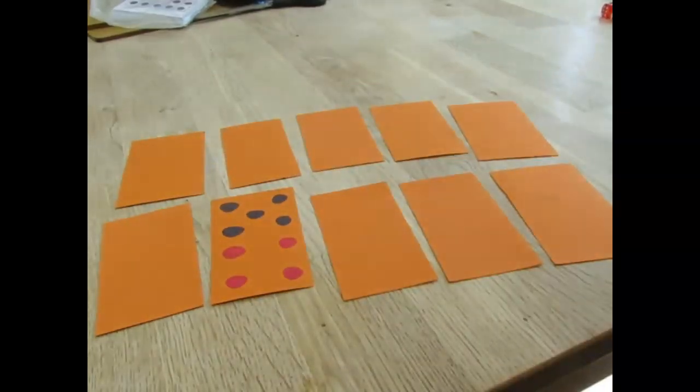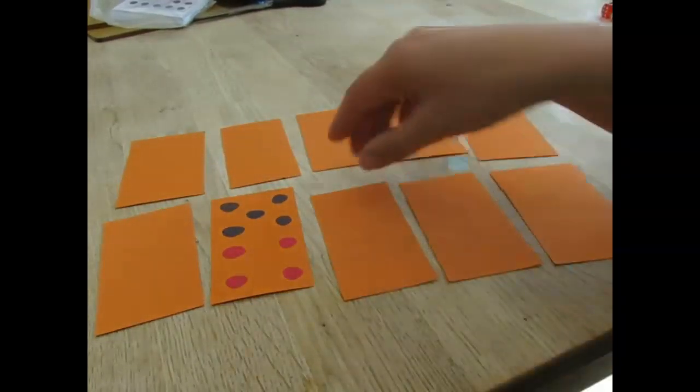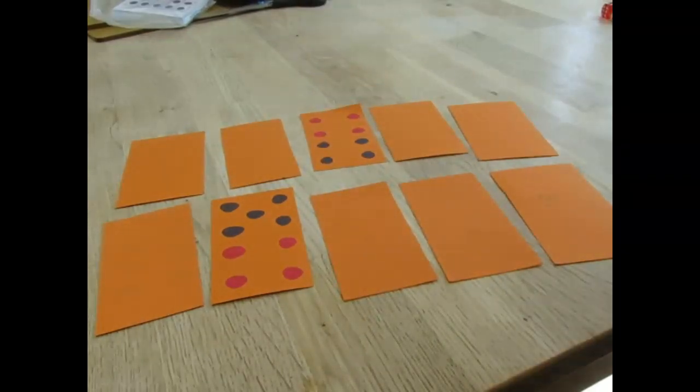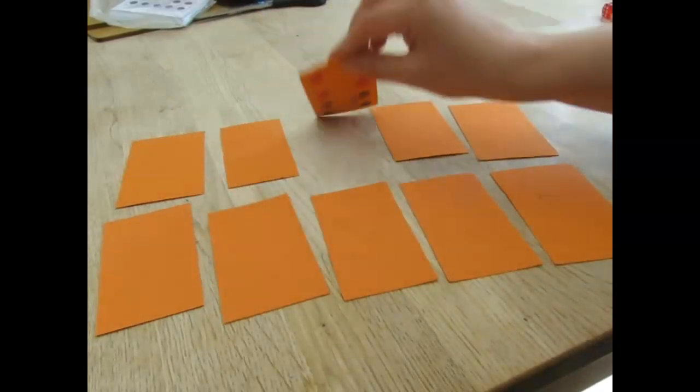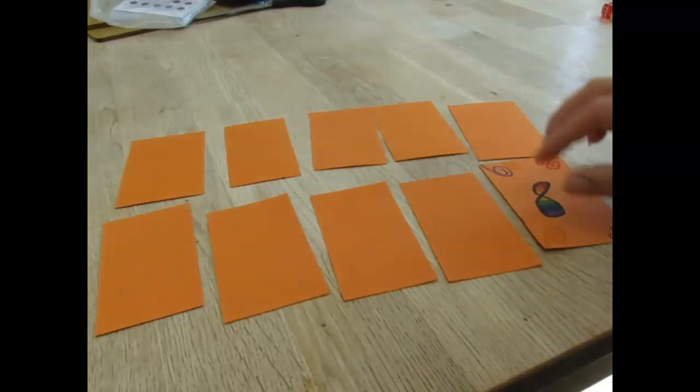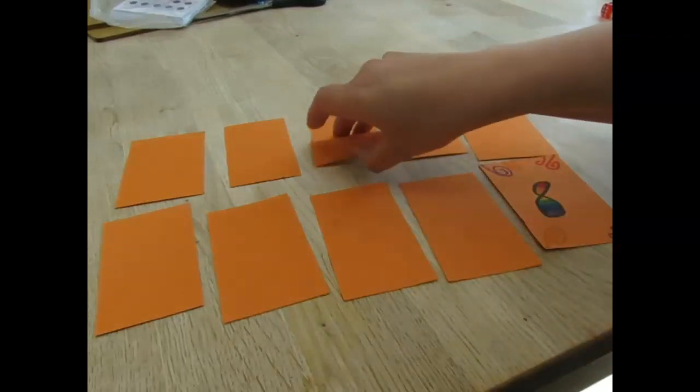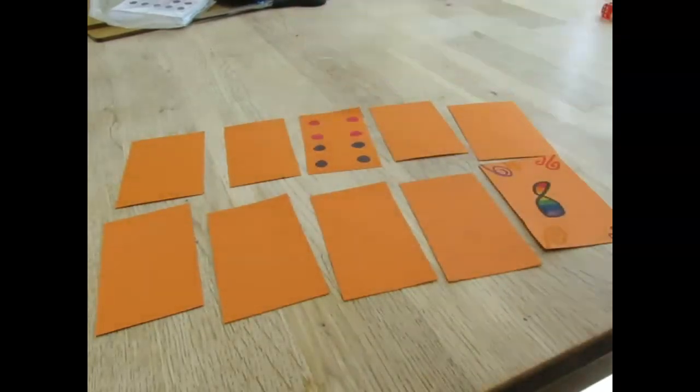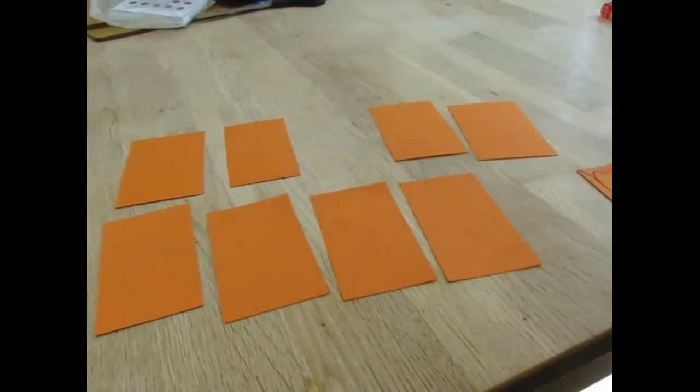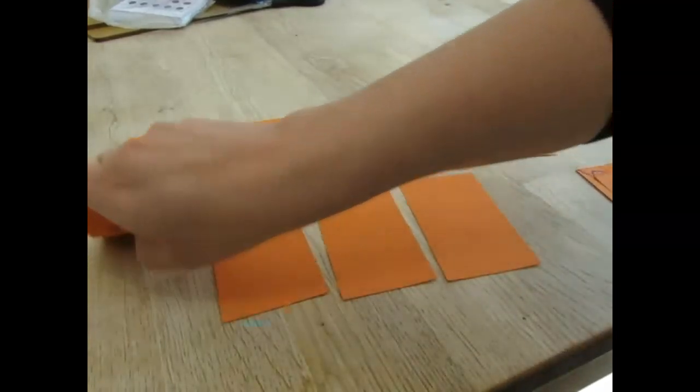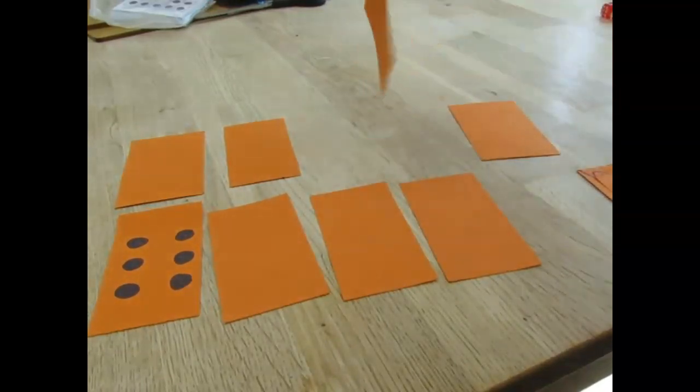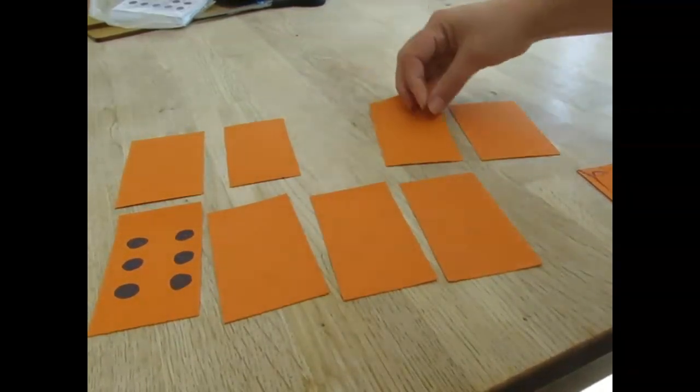The idea is you take turns to choose two cards and you try and find a pair. So I've turned over a nine and an eight. They're not the same. Then the next player would turn two over. So I've got an eight. Oh did I just have eight? I've got a pair. So I would take those now and I've won those. Then the other person would have a go. I've got a six. Let's try here. That's a seven. So that's not a pair.